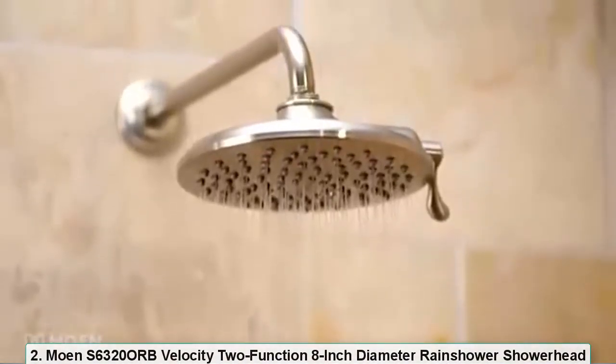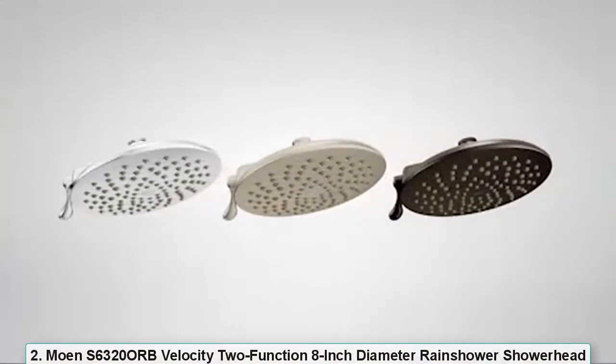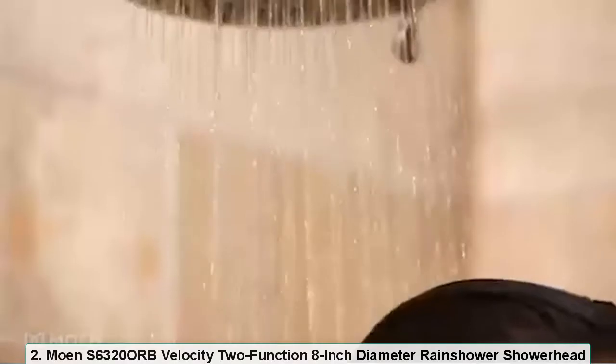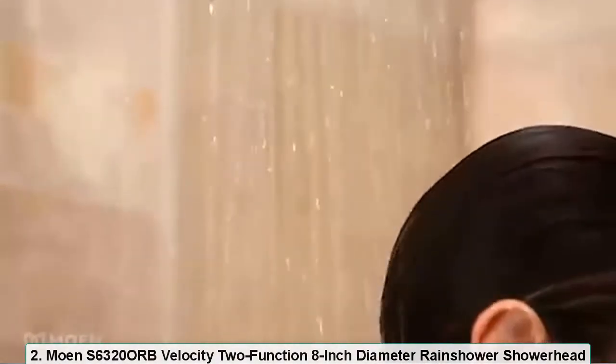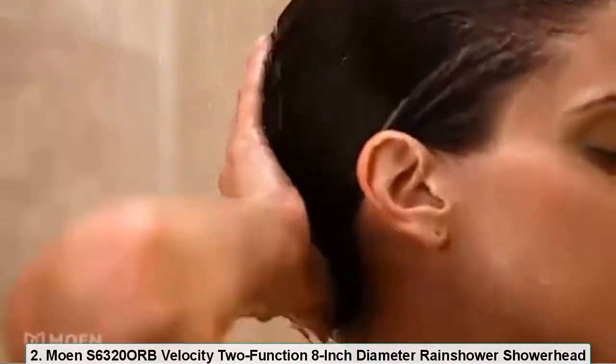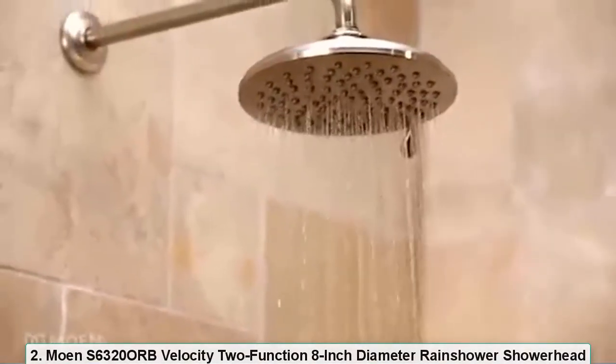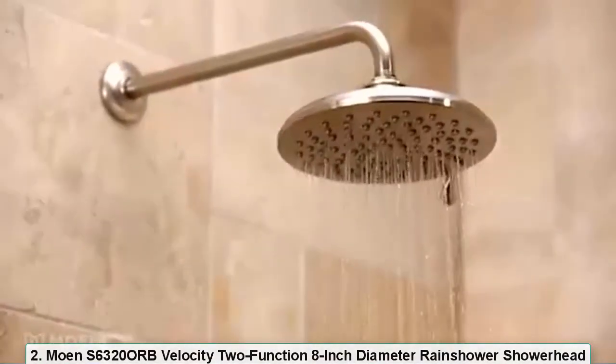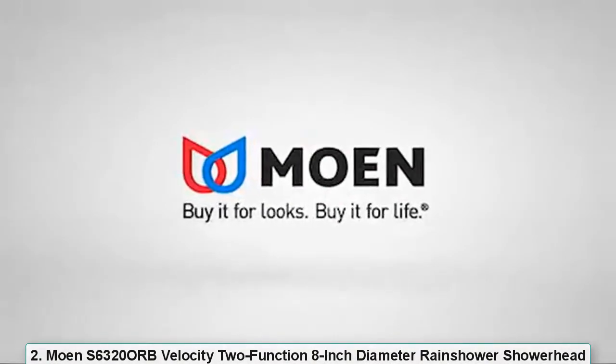Velocity is available in chrome, brushed nickel, and oil-rubbed bronze finishes. An available eco-performance model saves water without sacrificing performance. The Velocity rain shower from Moen: buy it for looks, buy it for life.